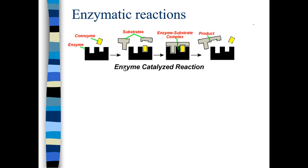Enzymatic reactions are very specific. An enzyme has a configuration that only specific substrates can fit into. Enzymes generally have another component called a coenzyme, which is not a protein — just another name for an enzyme helper. Once the coenzyme comes in, that allows substrates to come in. The substrates then form an enzyme-substrate complex, and then they're joined together to form a single product.